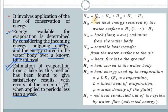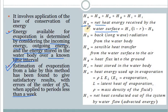The equation for the energy budget method is: H_n = H_b + H_e + H_a + H_g + H_s + H_i. H_n represents the net heat energy received by the water surface. H_b represents back radiation from the water body — some radiation gets reflected and that energy is represented by H_b. H_a represents the sensible heat transfer from the water surface to air.